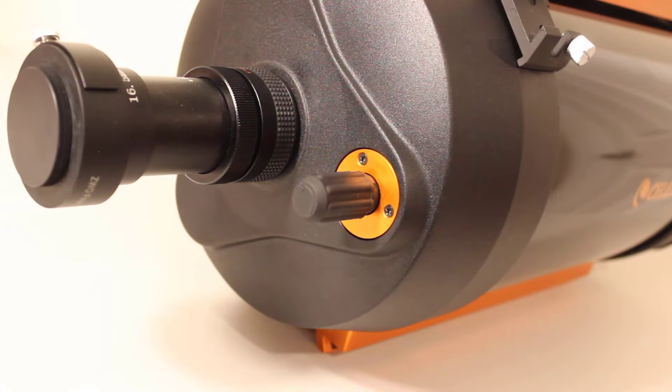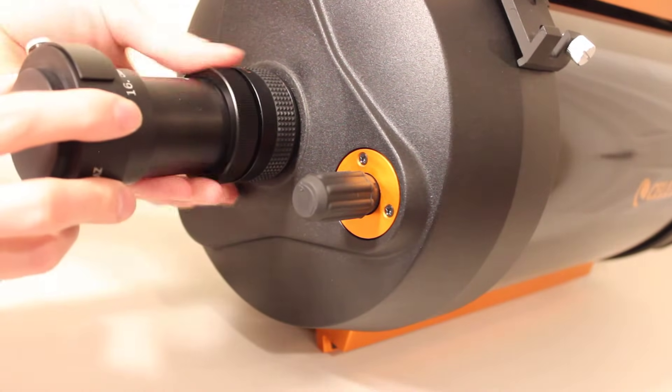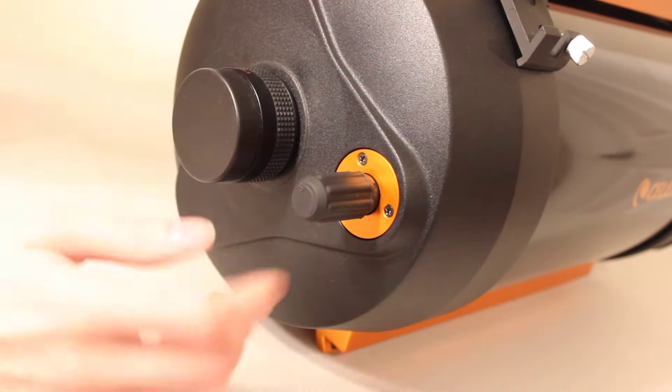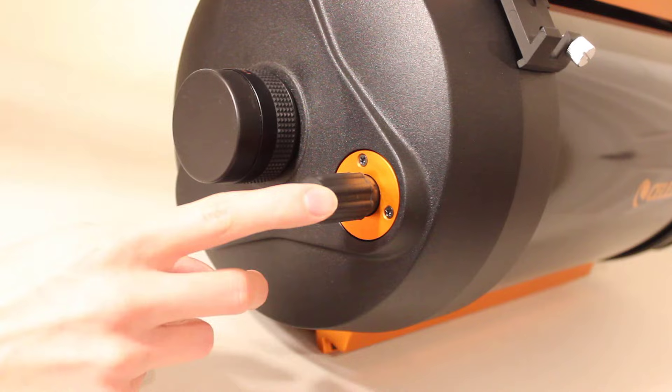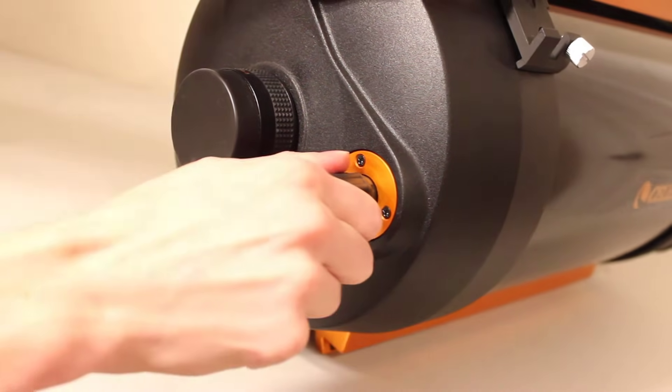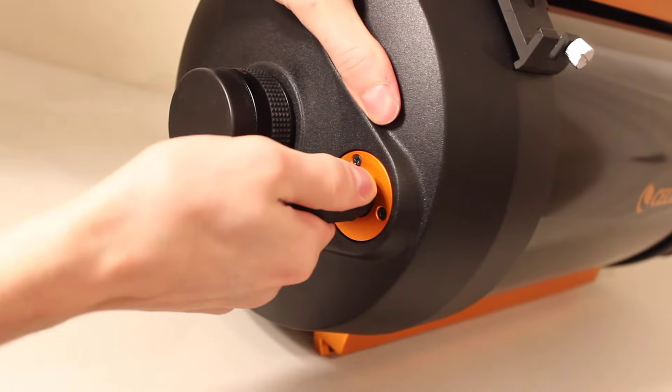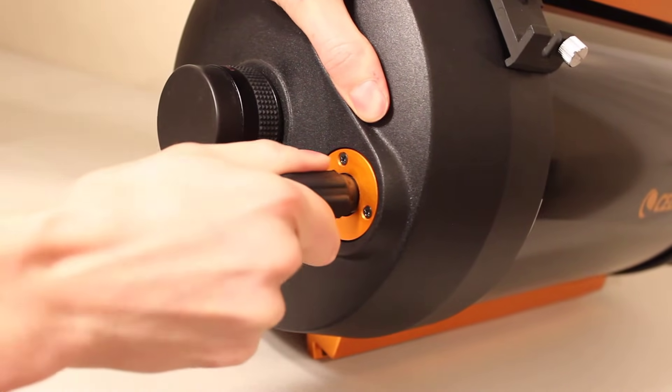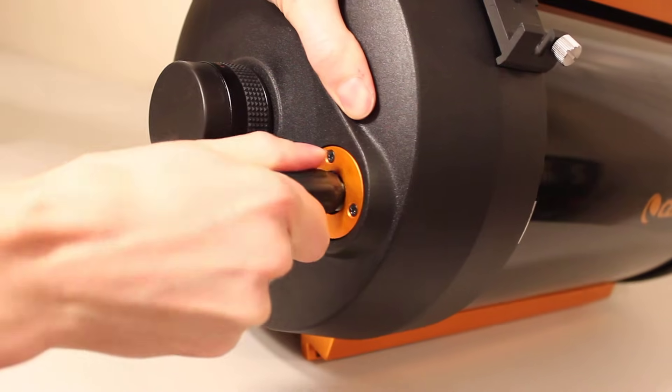I'm going to go ahead and start things off by just removing my imaging train here. And then you're going to want to pull off your rubber focuser knob. Now, this can be tricky for some people. Sometimes it's really tight. If you can't get it off, I'm going to show you another method to do this.